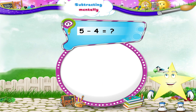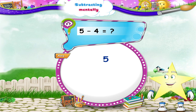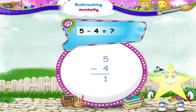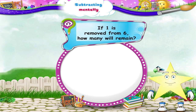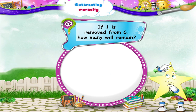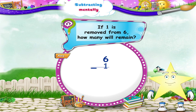Now 5 minus 4 is... Yes, 5 minus 4 is 1, Starry. Now, if 1 is removed from 6, how many will remain? 5, Starry.